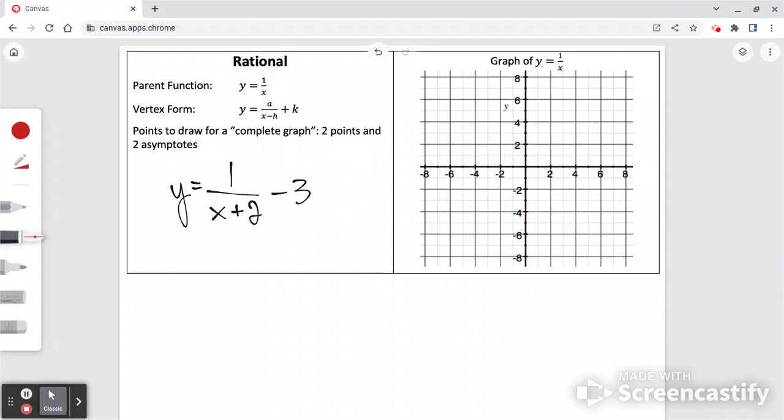So here is a transformed rational function. You can still see the 1 over x part, but we have a couple other things happening. So the number stuck on the end moves it up or down. If it's minus 3, it will go down 3. The number right next to the x, if it helps, imagine that there's parentheses here. It wouldn't change anything if I drew parentheses there. This moves it left and right, and it does the opposite of what it seems like. Plus 2 seems like it would go in the positives, but it's actually going to go in the negatives. So it'll go left 2.